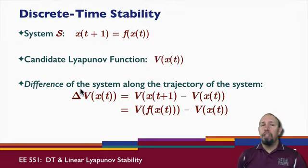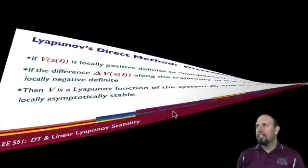Instead, however, of using the derivative of V of X, we look at the difference of the system along the trajectory of the system. So instead of the derivative, we look at the difference. So delta V of X is equal to V of X at time T plus 1 minus V of X of T. X of T plus 1 is equal to F of X of T.